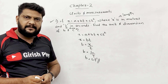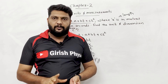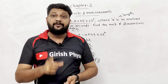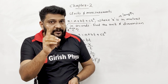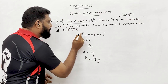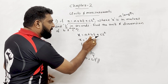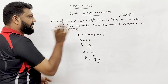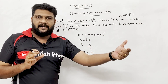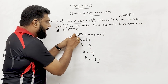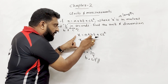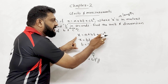This is the principle of homogeneity of dimensions. For x = a + bt + ct², LHS equals RHS. So x equals a, x equals bt, and x equals ct squared — each term must have the same dimension as x.